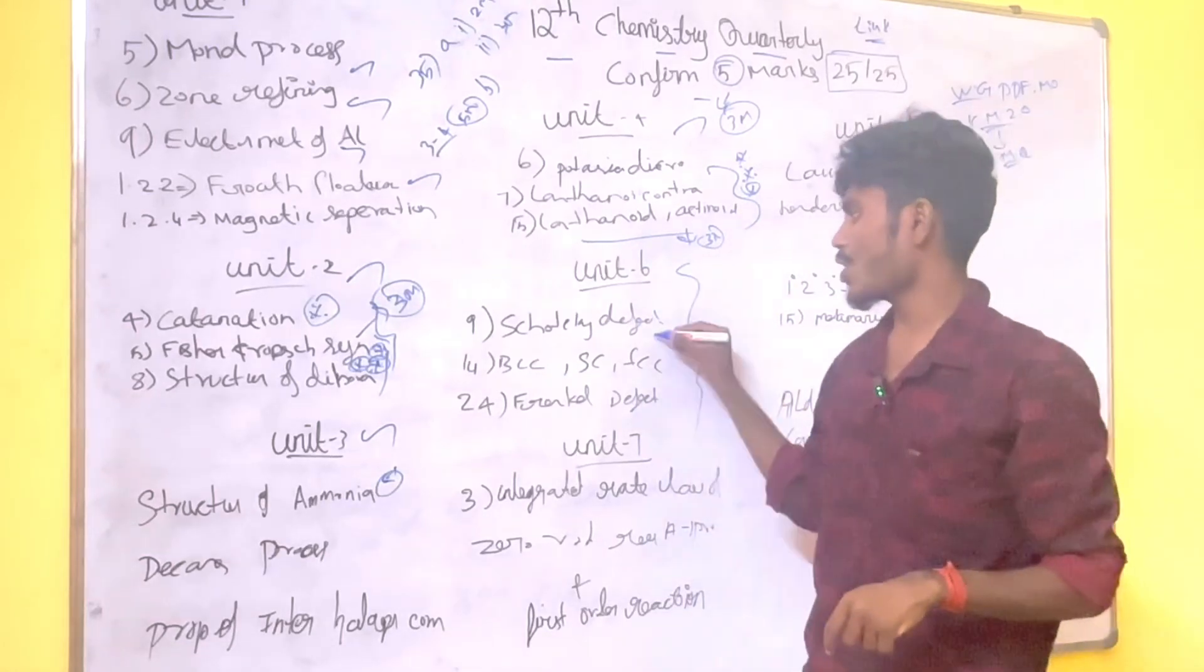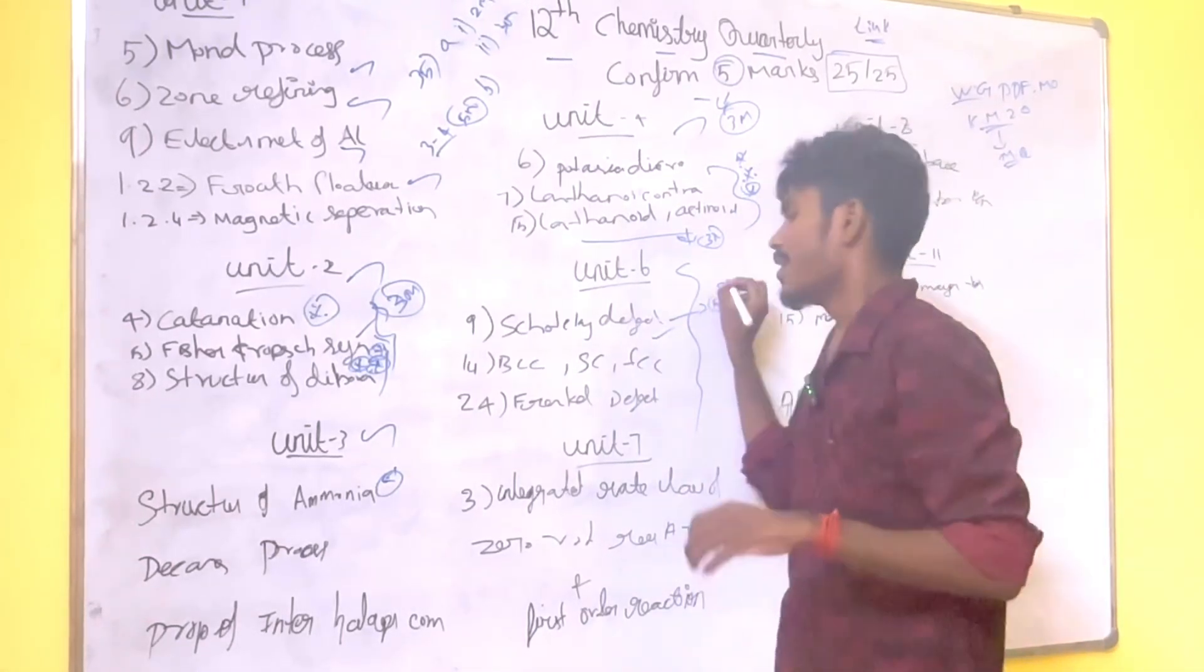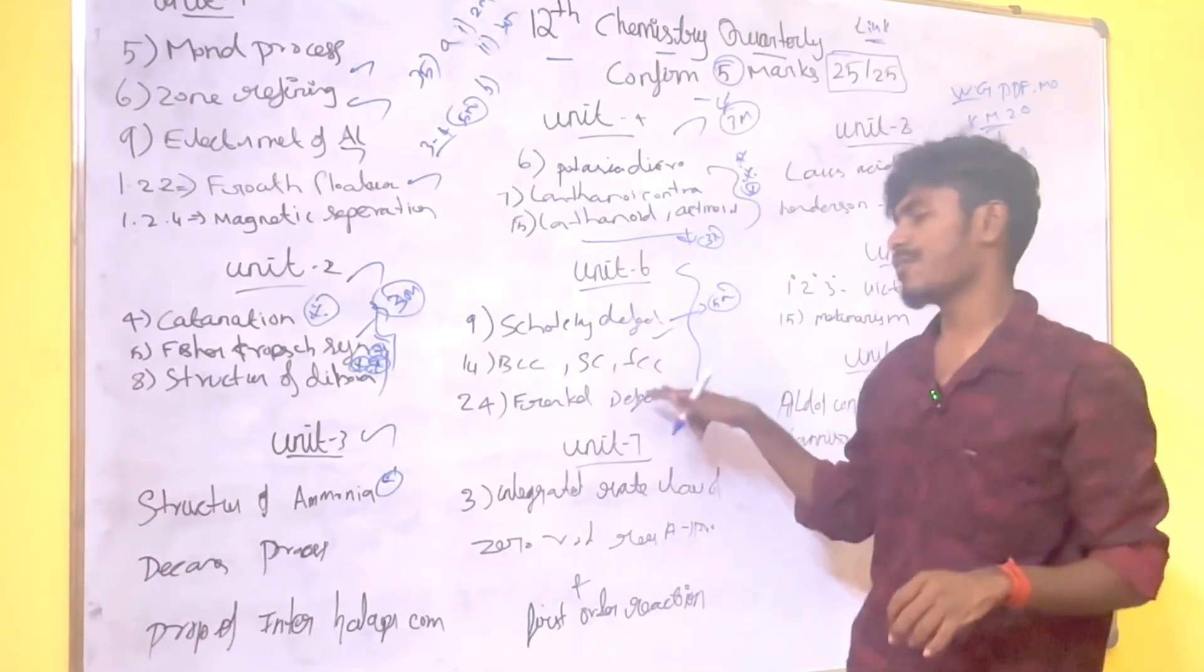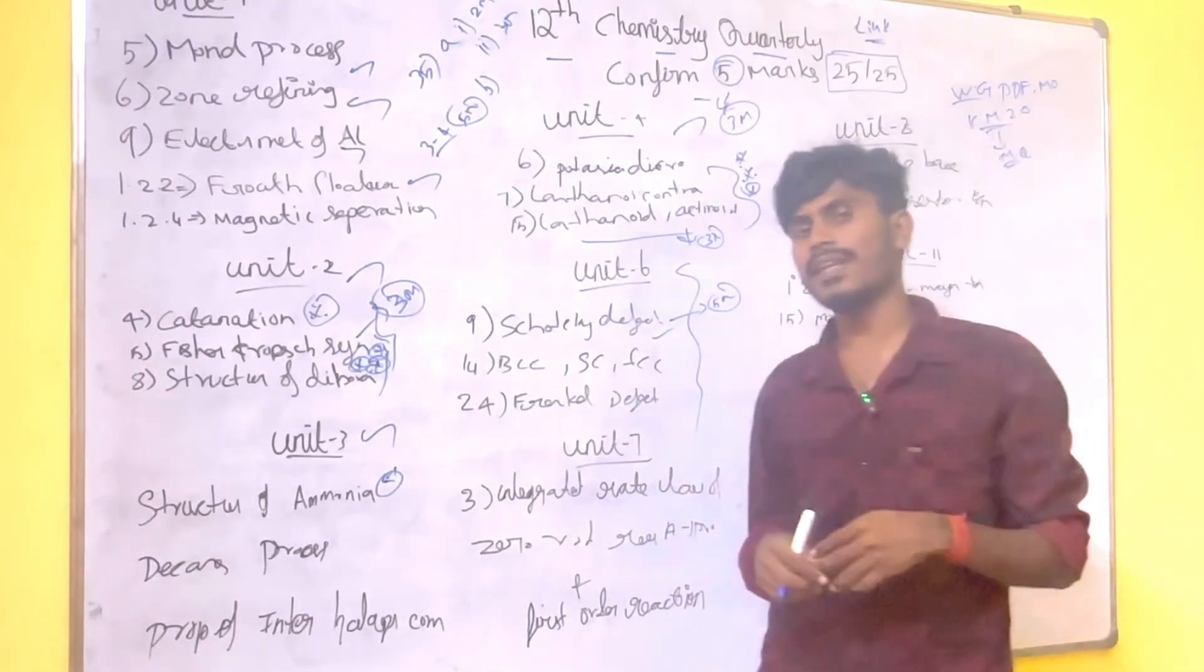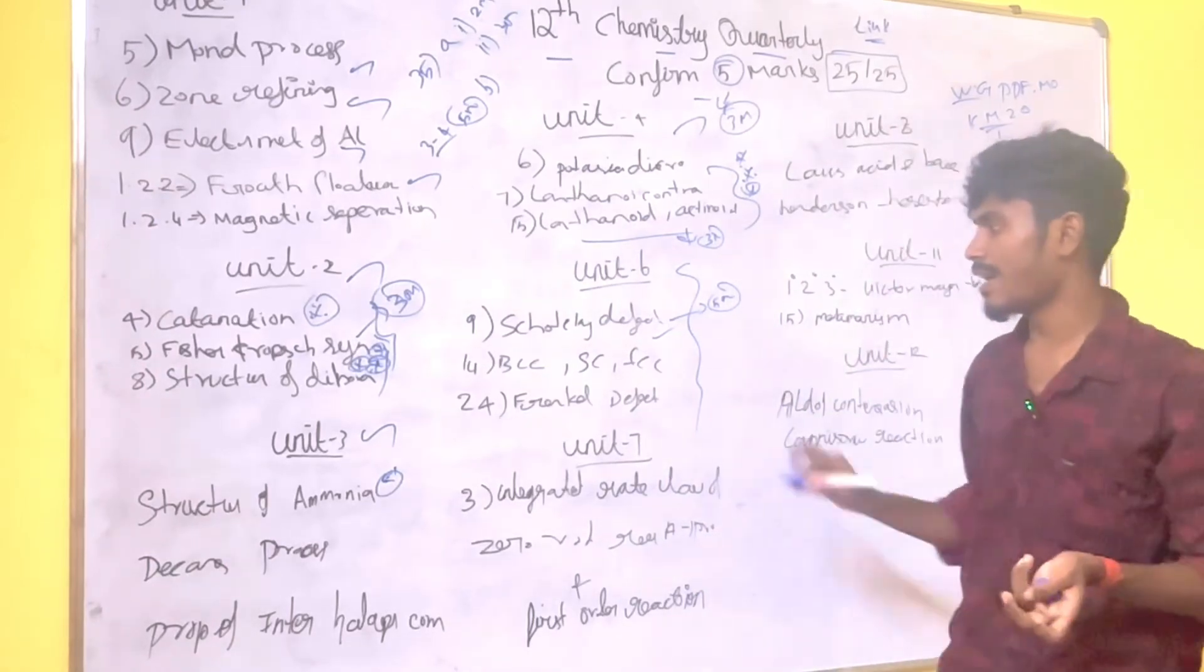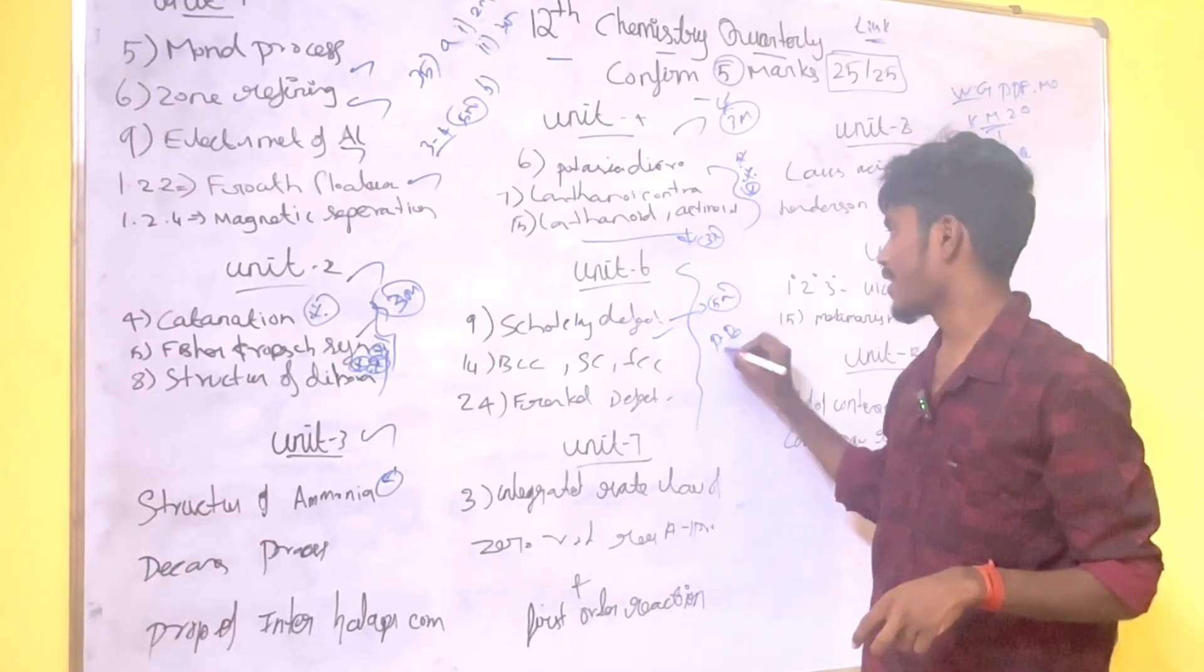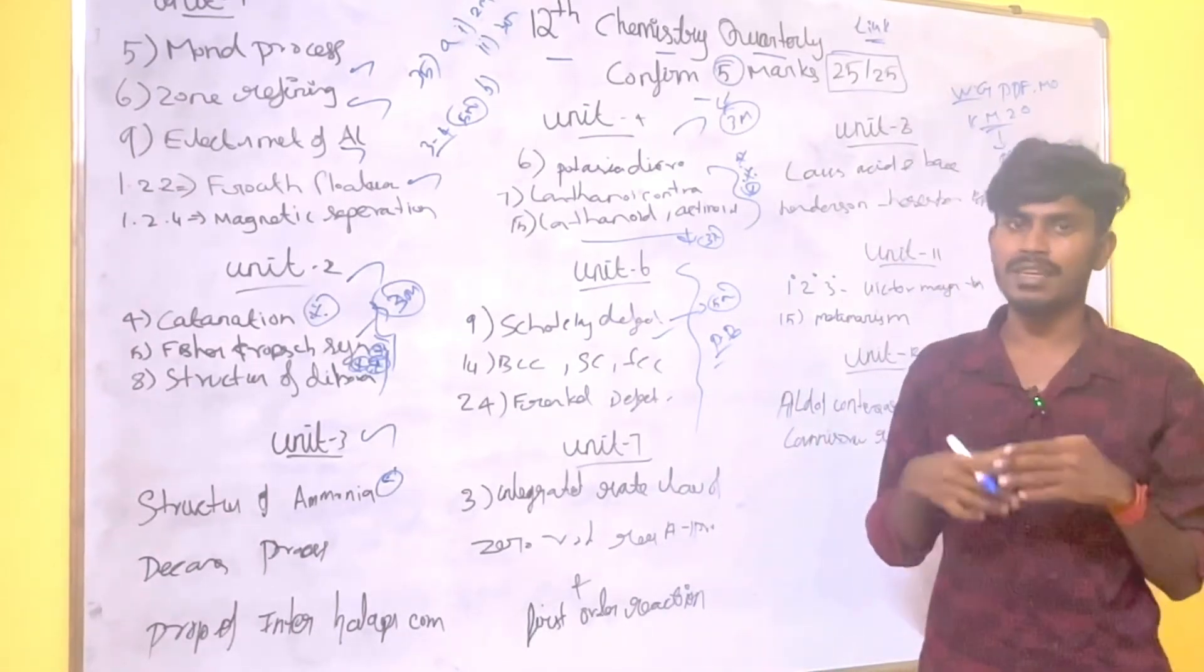Unit 6, Schottky and Frenkel defect, you can use 5 marks. You can use 3 marks or 2 marks. BCC, FCC, you can calculate packing efficiency. You can use Frenkel defect. Sometimes there are types of point defects. You can use that with examples.